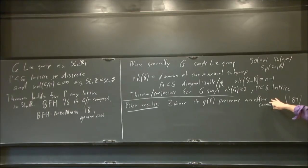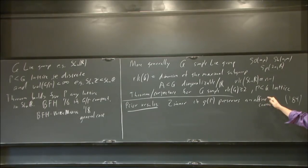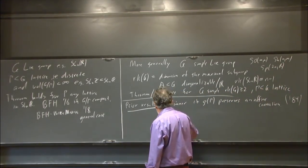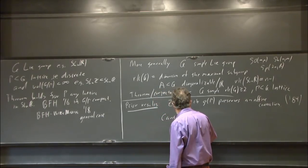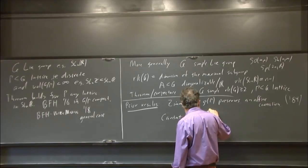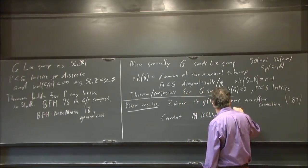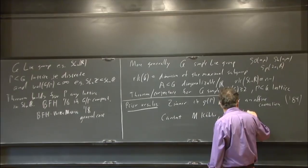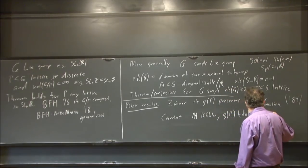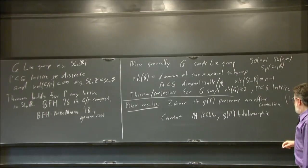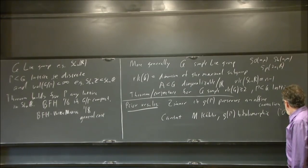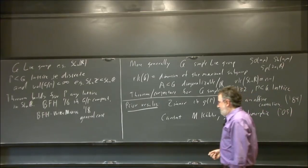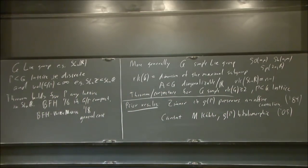Another result that was proved before: Cantat proved this if M is Kähler and rho of Gamma is bi-holomorphic. It's still a setting where the automorphism group is a relatively nice object, and that took until 2005. So there's been some progress, but it's been slow going.